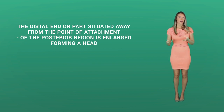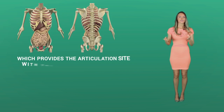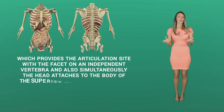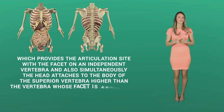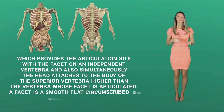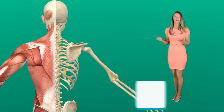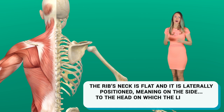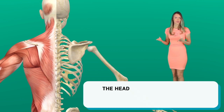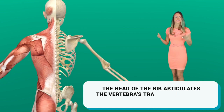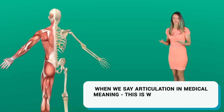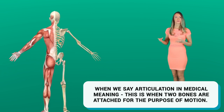The distal end — the part situated away from the point of attachment of the posterior region — is enlarged, forming the head, which provides the articulation site with the facet on an individual vertebra. The head also attaches to the body of the superior vertebra higher than the one whose facet it articulated with. A facet is a smooth, flat, circumscribed or circular surface. The rib's neck is flat and laterally positioned to the head, and ligaments attach to it. When we say articulation, the medical meaning is when two bones are attached for the purpose of motion.